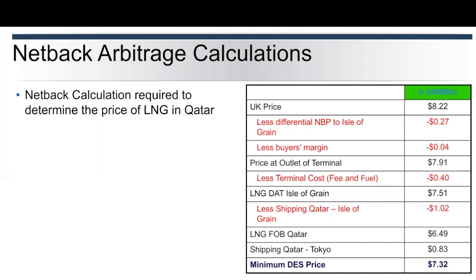What we're doing is taking what the UK price is, then deducting the difference from the actual trading hub to the terminal — in this case, the Isle of Grain — taking off a buyer's margin, which gives us a price at the outlet to the terminal. Less terminal costs and fees gives us a DAT or DES price at the Isle of Grain.